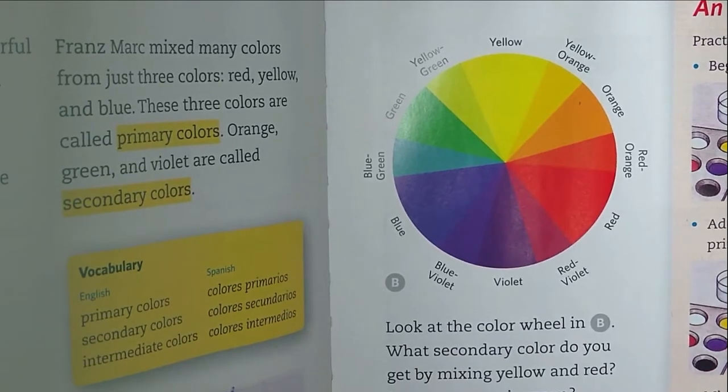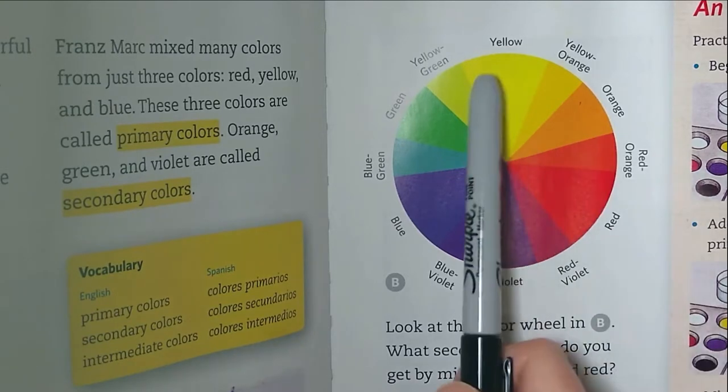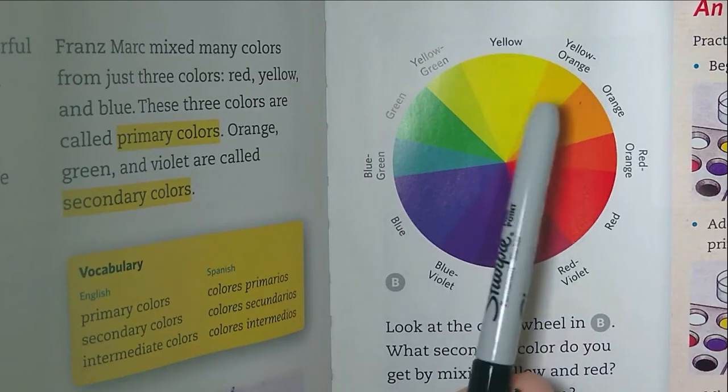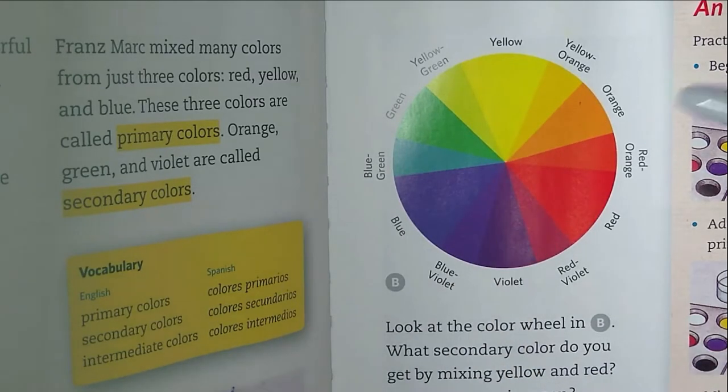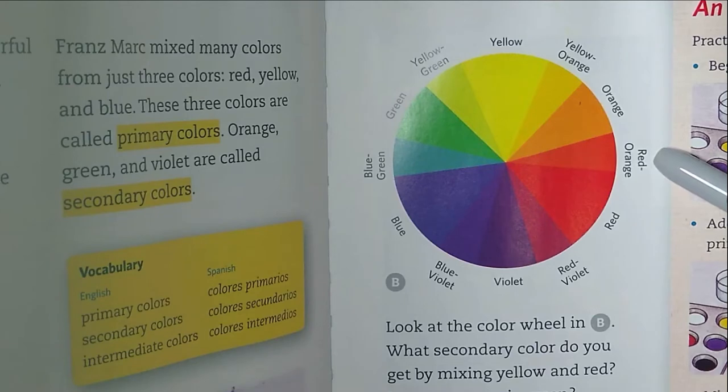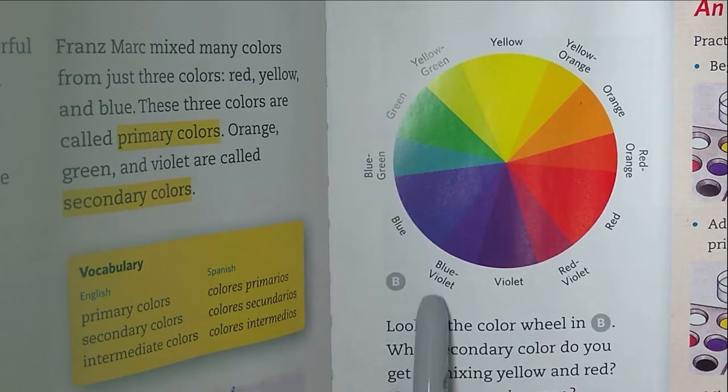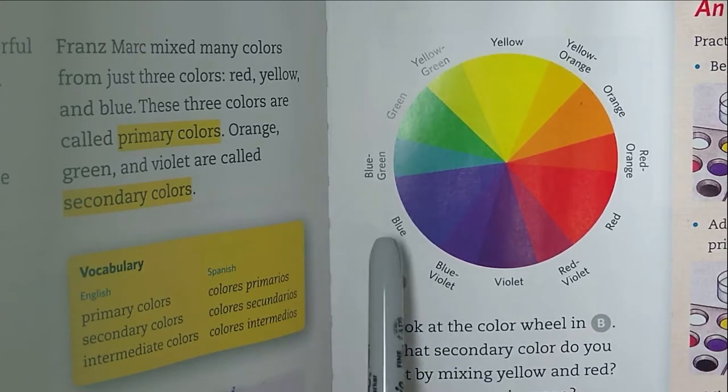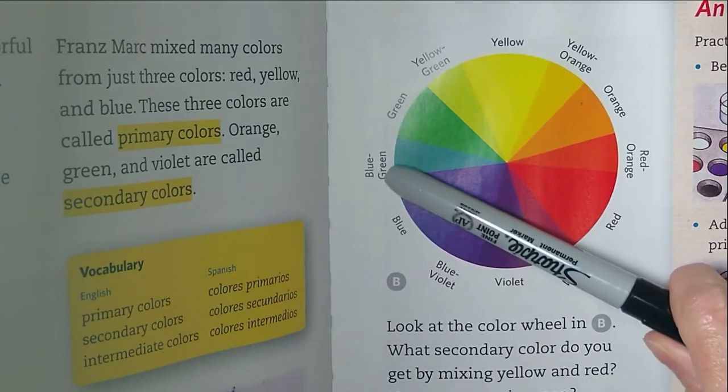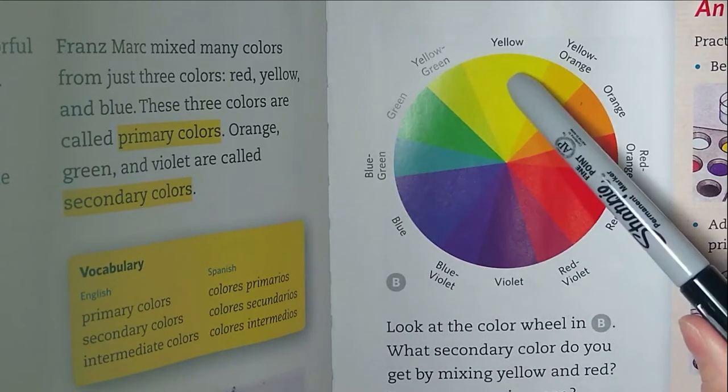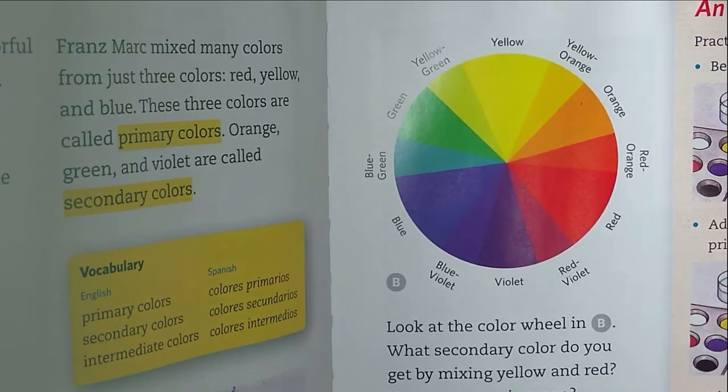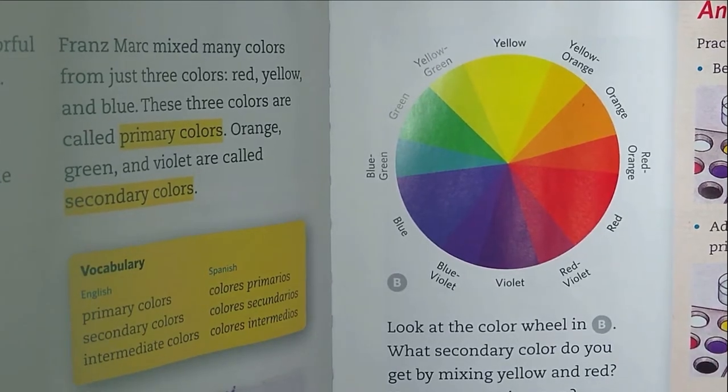On the intermediate colors, the name always starts with the primary color first. It's a primary color and a secondary color together. When you mix yellow and orange you get yellow-orange. When you mix orange and red you get red-orange. When you mix red and violet you get red-violet. When you mix violet and blue you get blue-violet. When you mix blue and green you get blue-green. When you mix green and yellow you get yellow-green. Now let's practice making these colors together.